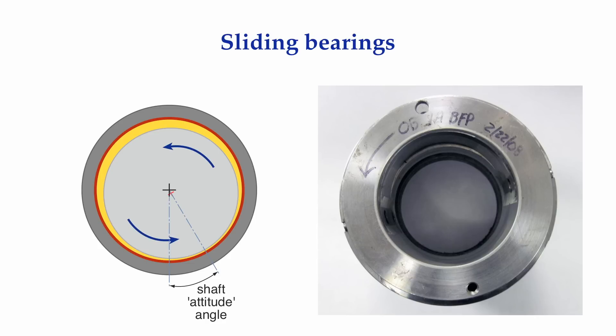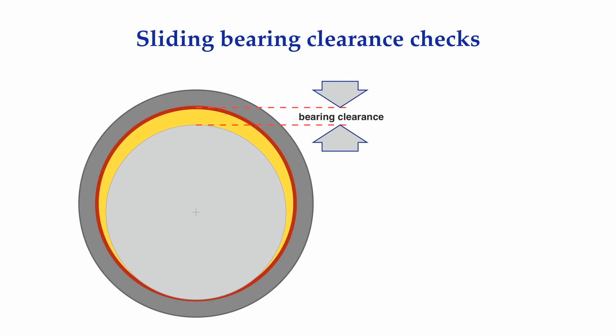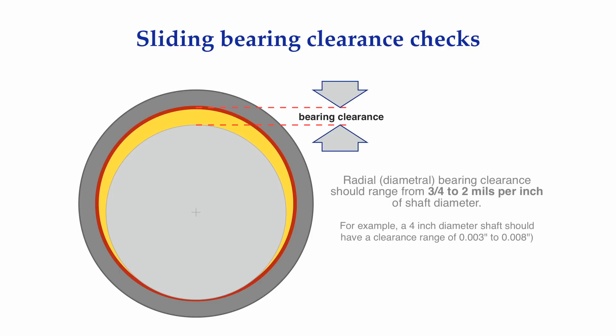Other common names for this type of bearing are journal bearings, plane bearings, babbit bearings, sleeve bearings, bushings, and tilt pad bearings. These types of bearings require a certain amount of clearance between the shaft and the bore of the bearing, often referred to as the radial bearing clearance. This clearance typically ranges between three-quarters of a mil to two mils per inch of shaft diameter. One mil is equal to one one-thousandth of an inch. The term mil is also used as a unit of vibration measurement.